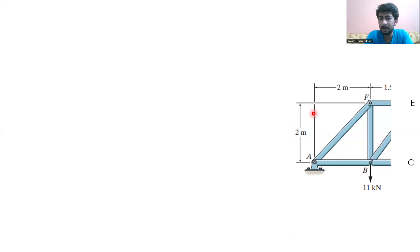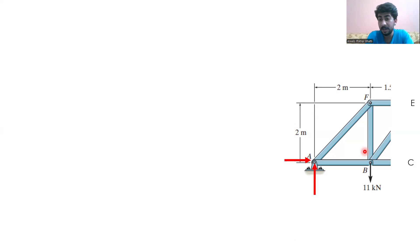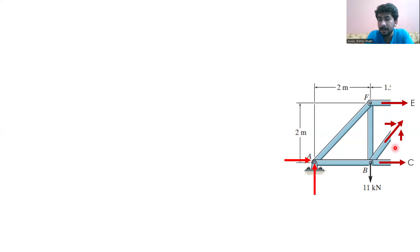I am going to use the left side of the truss, but you can also use the right side, to find the forces in the members. We have already found the reaction forces acting at point A. You can see the forces acting on the members, and this is our section line which separates this part of the truss from the right side.